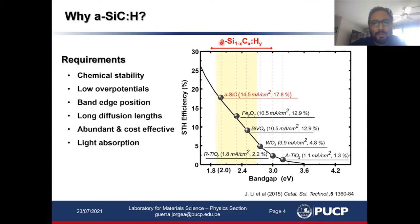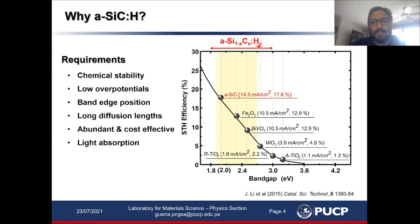Among these materials, silicon carbide has been used already as a photocathode in photoelectrochemical devices. In particular, one can change the optical bandgap of this material by changing the stoichiometry. However, by changing the stoichiometry, one can hinder its chemical stability and also the band edge position alignment. Therefore, what we aim in this work is to tailor the optical properties and the optical bandgap of this material by changing the hydrogen content, as well as by performing post-deposition thermal treatments.